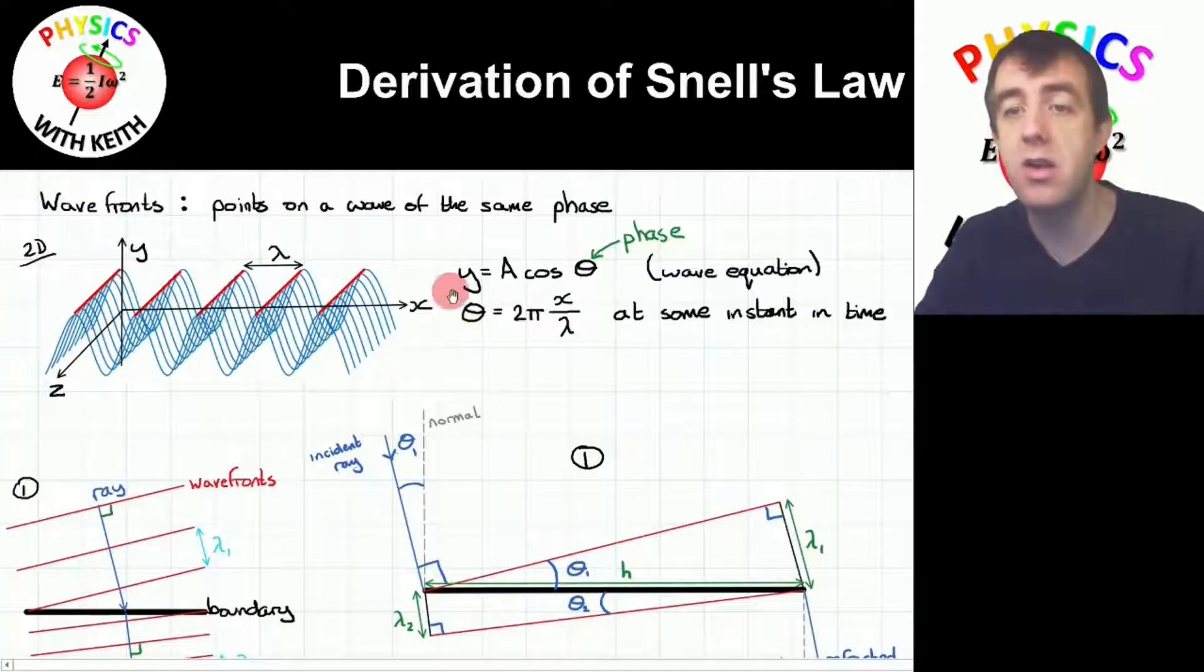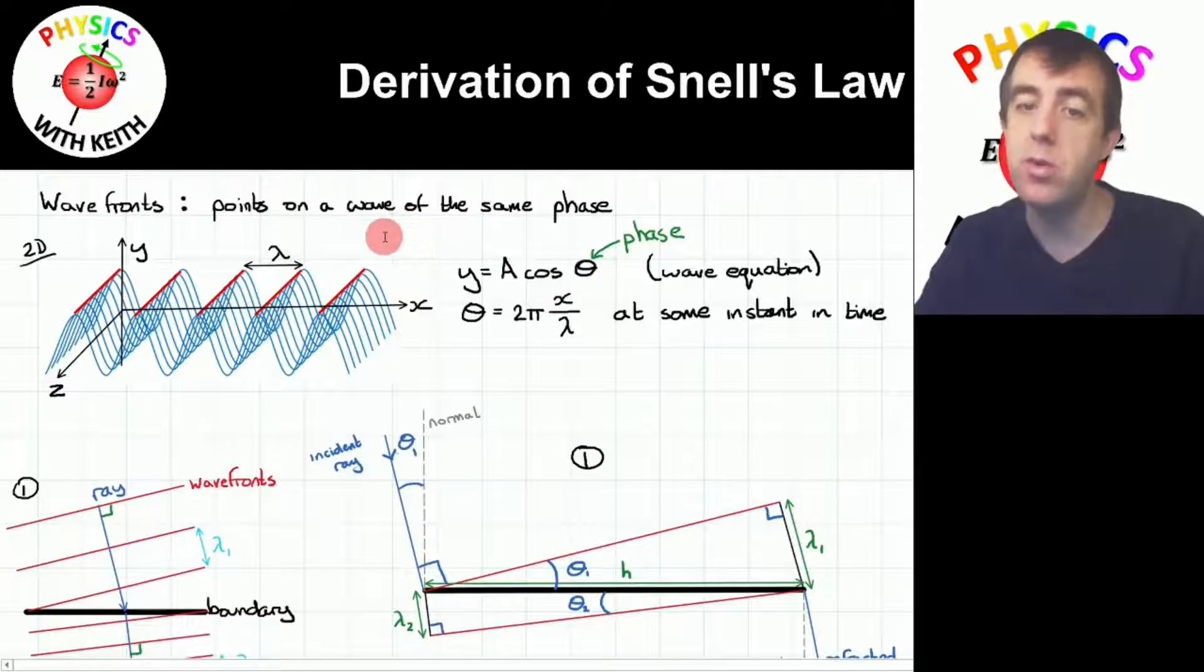The general wave equation is that displacement equals amplitude multiplied by the cosine of the phase, which here I'm calling theta. We have to be a bit careful because we will be using theta later on, so you can call it a different letter if you prefer.